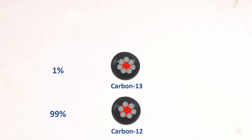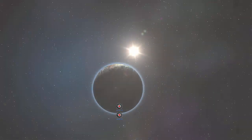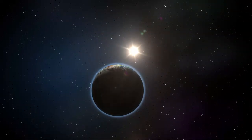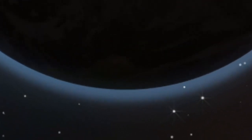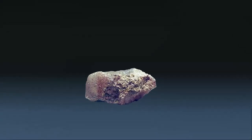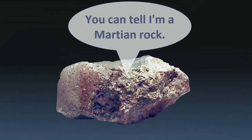The proportion of the different isotopes varies at different places on Earth and across the universe. A famous meteor found in Antarctica in 1984 was identified as coming from Mars, because of its particular proportion of carbon-13 to carbon-12 isotopes.